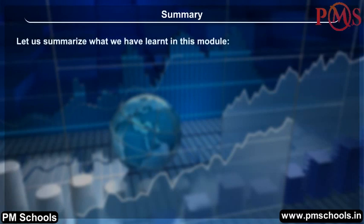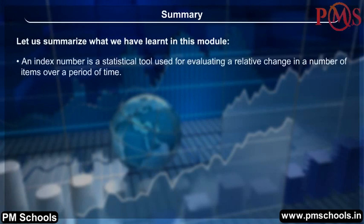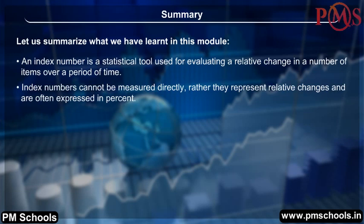Summary. An index number is a statistical tool used for evaluating a relative change in a number of items over a period of time. Index numbers cannot be measured directly; rather, they represent relative changes and are often expressed in percent.